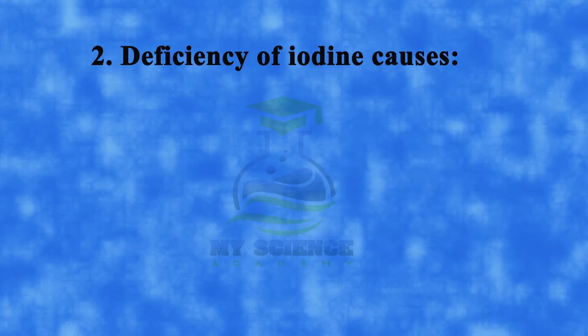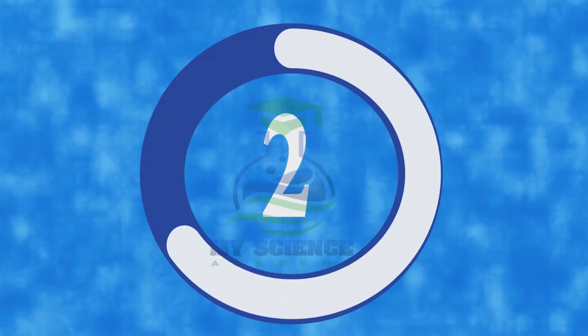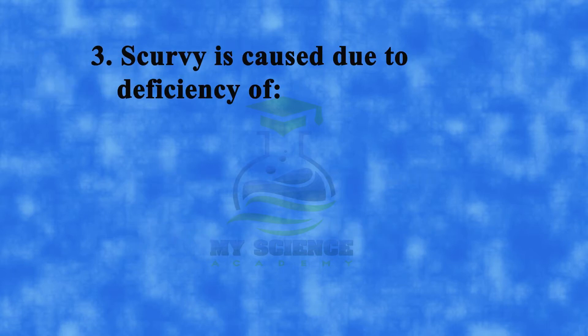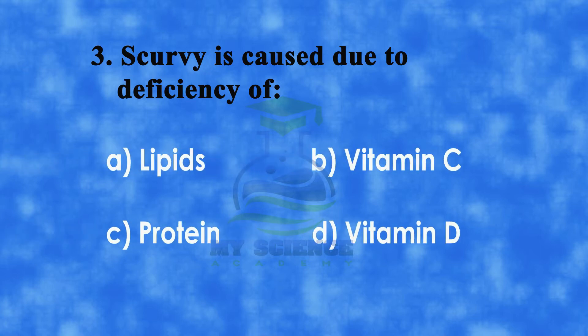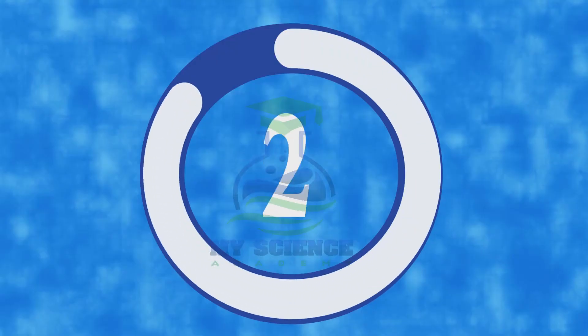Question number two: deficiency of iodine causes — a) goiter, b) anemia, c) scurvy, or d) obesity. The correct answer is a) goiter. Question number three: scurvy is caused due to deficiency of — a) lipids, b) vitamin C, c) proteins, or d) vitamin D.